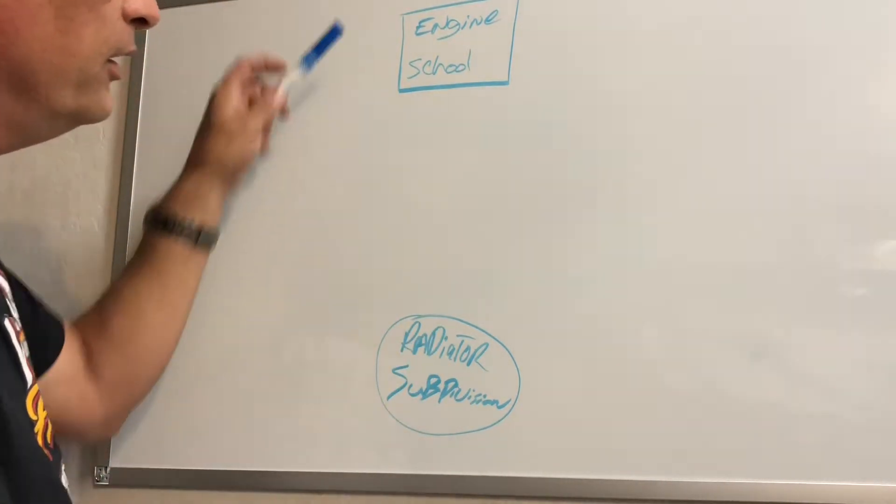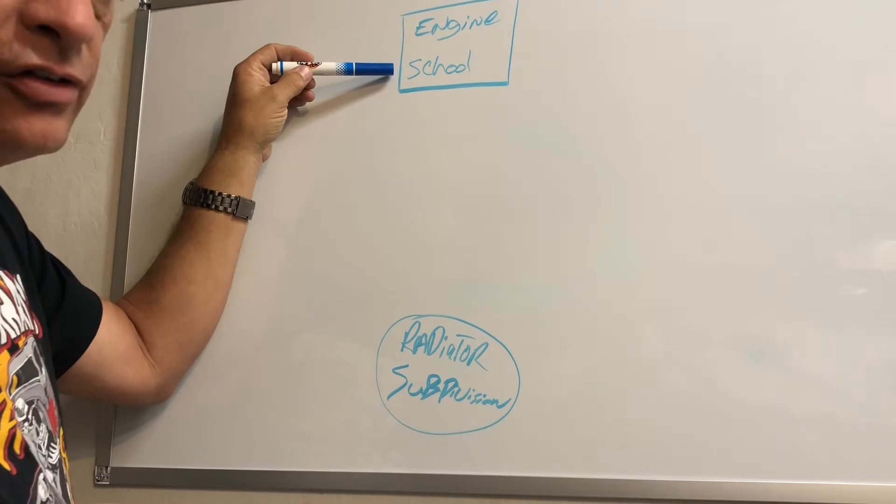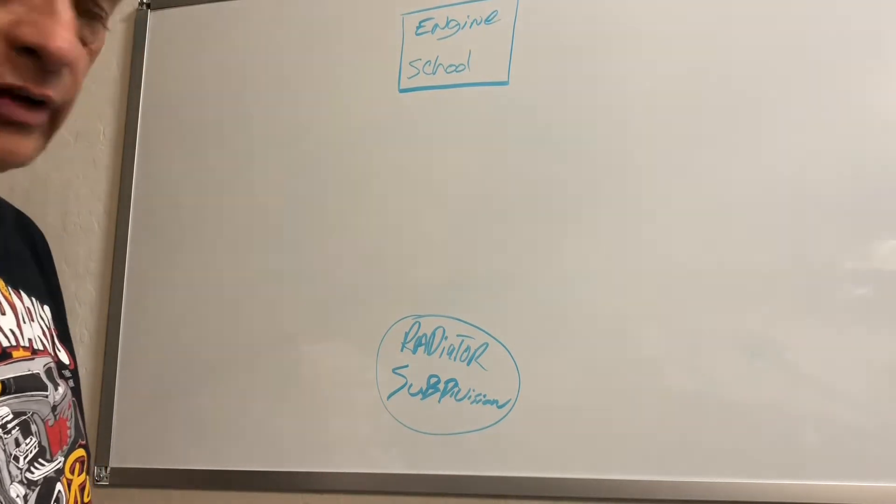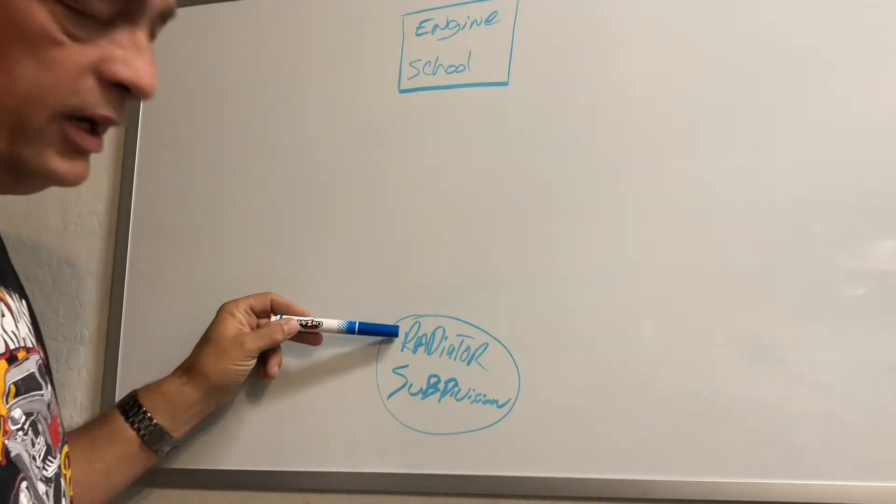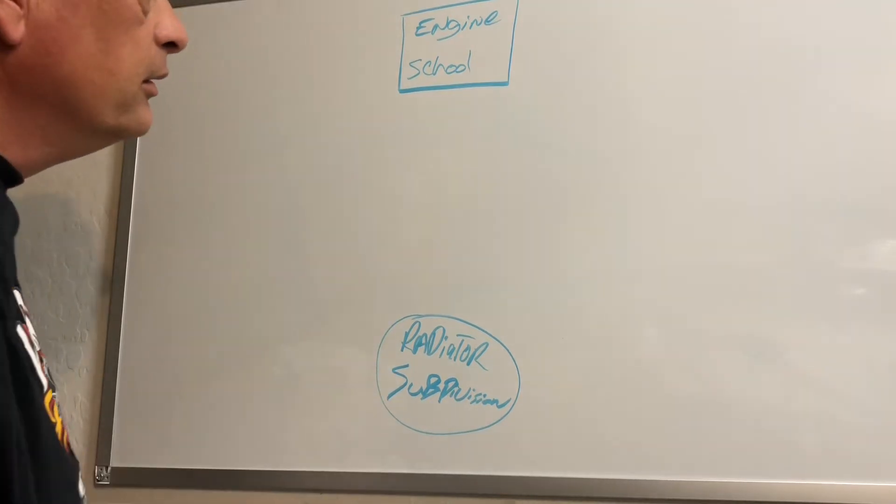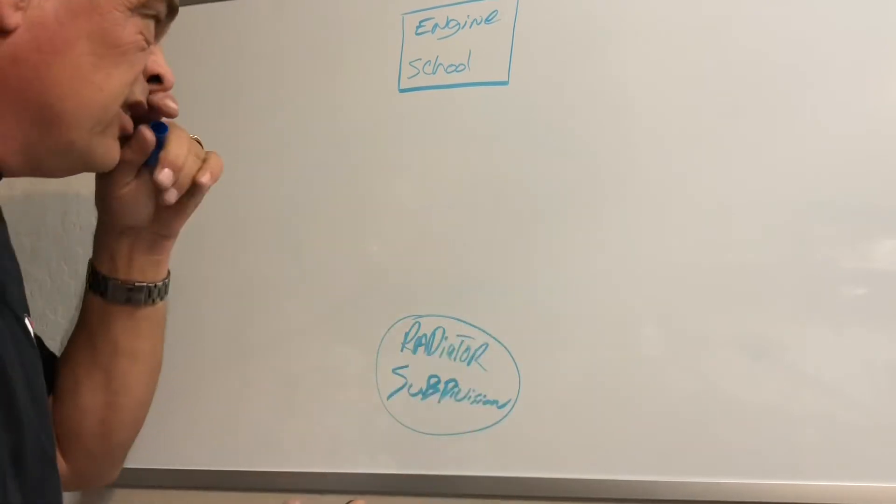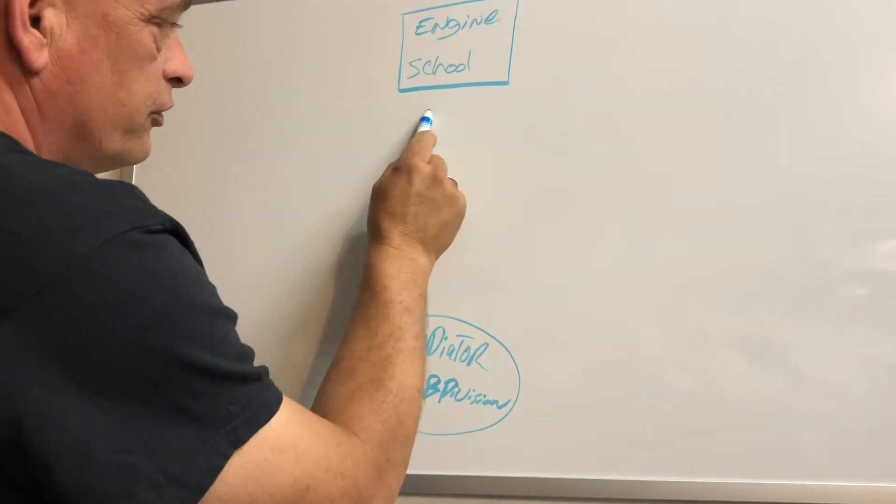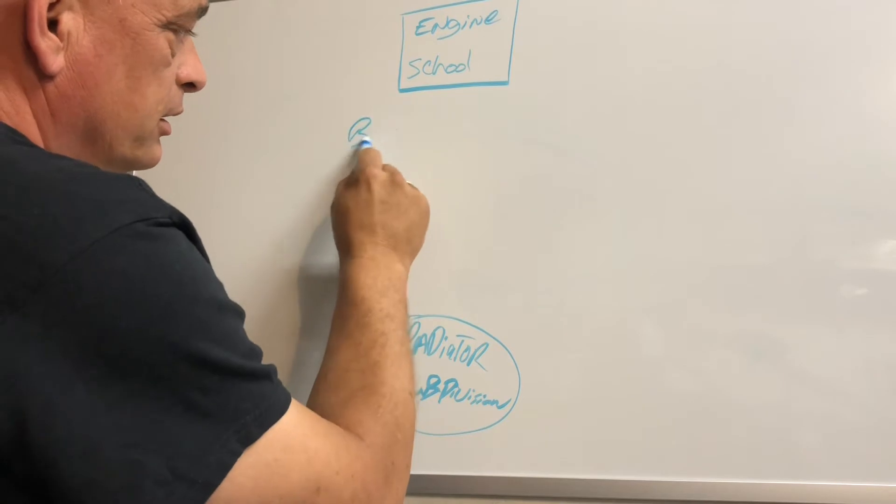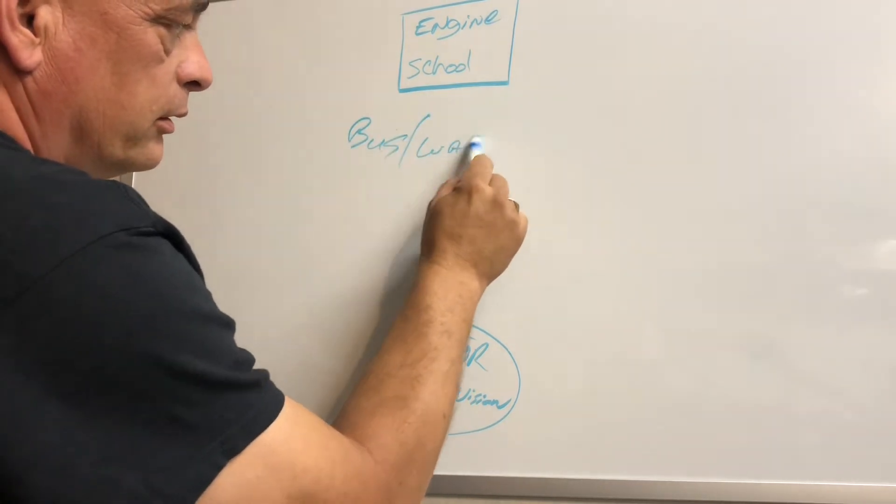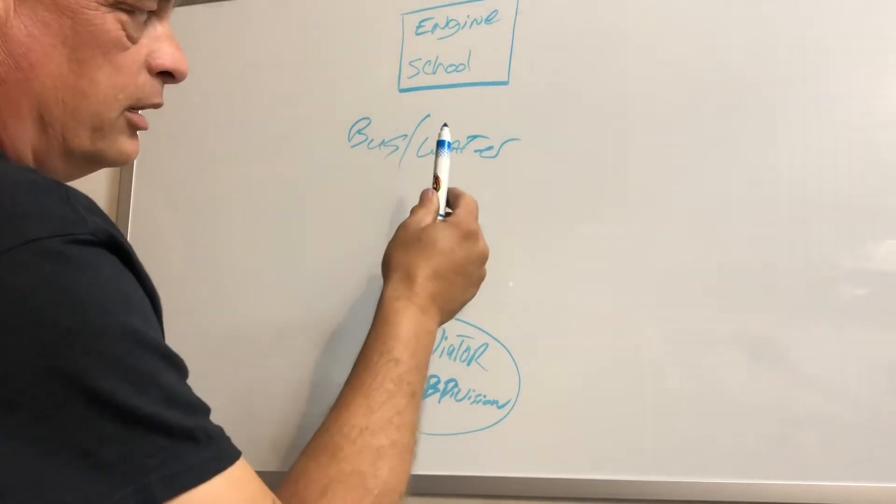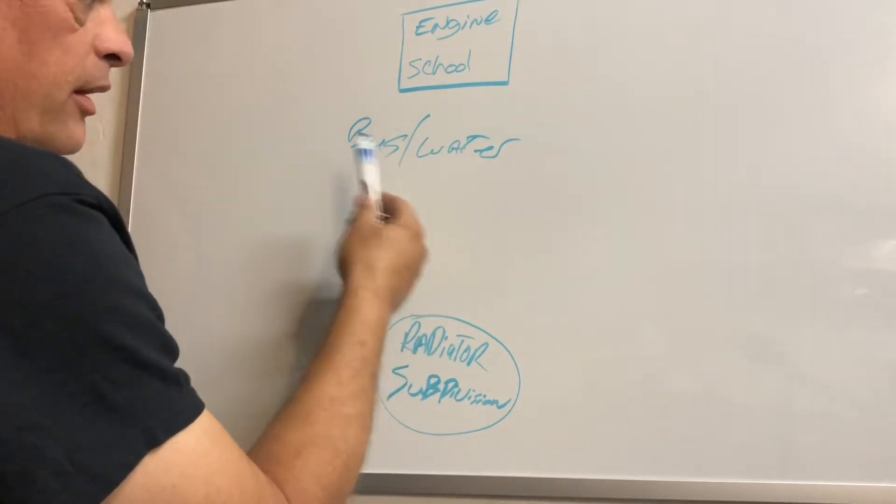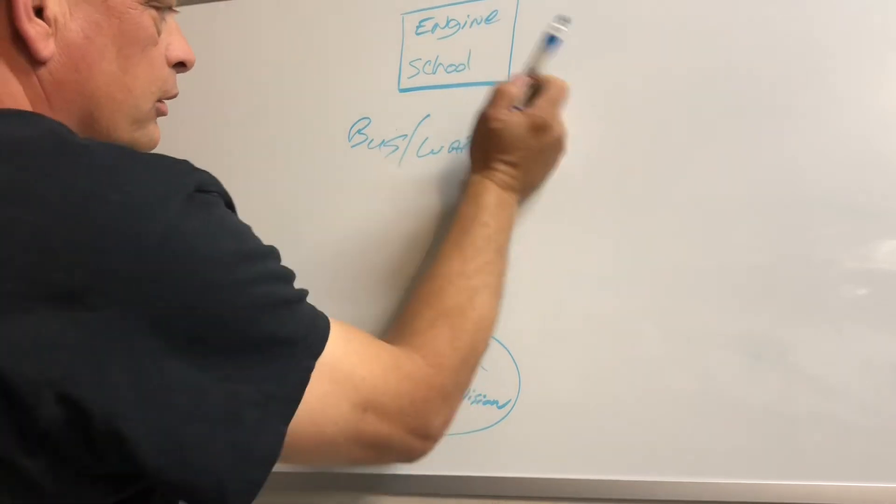So on the board here I have an engine or a school, in our situation we're going to just look at it as a grade school, grades kindergarten through six. And down here we've got the radiator or the subdivision where all the kids live. So this is really important, pay close attention to this. You're going to learn a lot if you do. So if you go to the school with a school bus, now the bus is going to be the same as water, and the water is going to pick up the heat out of the engine, or in this case the bus is going to pick up the kids out of the school.